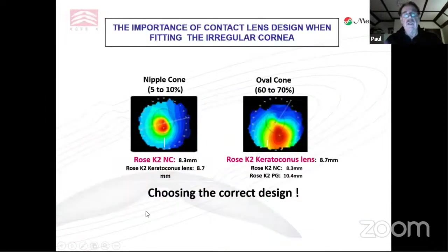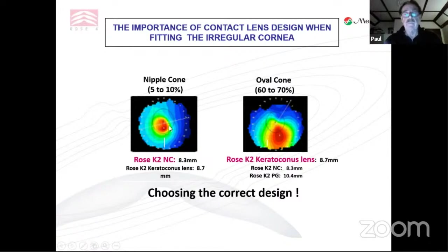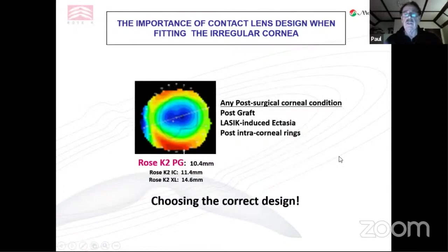Nipple cones are more common in some countries — quite common in Japan but tend to be about 5 to 10% of cones worldwide. A nipple cone is a very small cone, less than five millimeters, very steep like a volcano in the middle, with a lot of normal cornea surrounding it. The most common cone worldwide is the oval cone, greater than five millimeters in diameter, usually descended inferiorly. For oval cones, you use my original ROSE-K keratoconic design. For post-surgical conditions, which are often oblate centrally, keratoconic designs will not work — you need to go to a bigger diameter with the post-graft design at 10.4 millimeters.